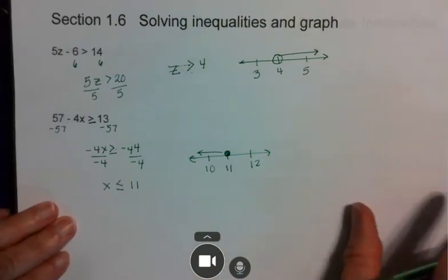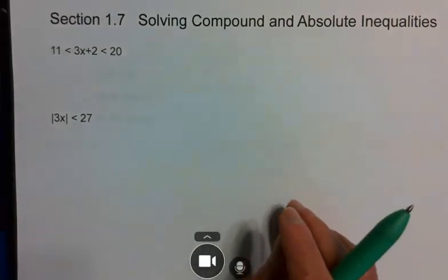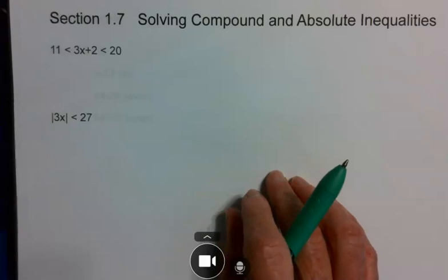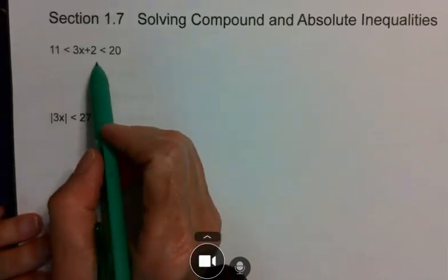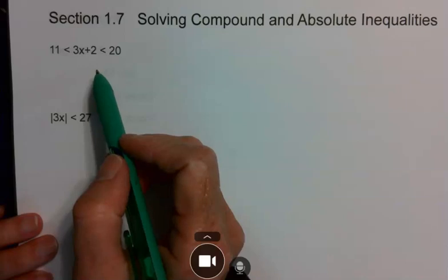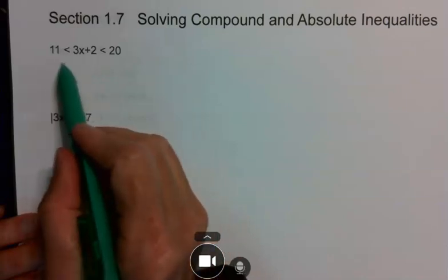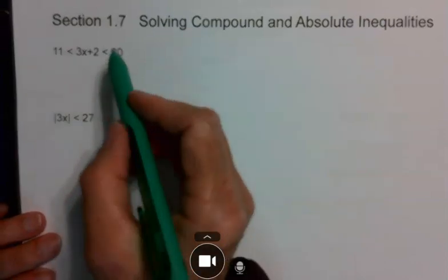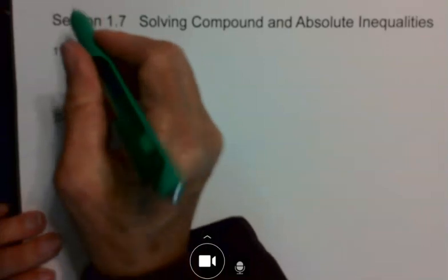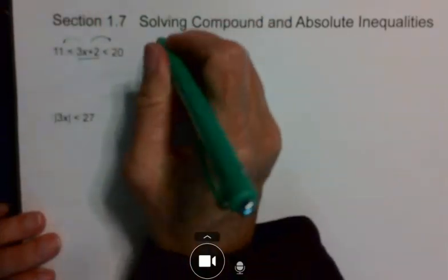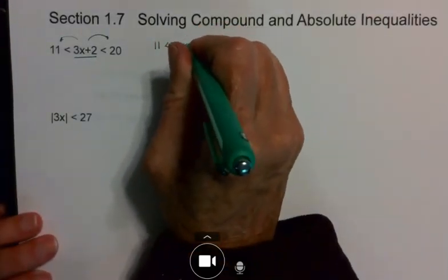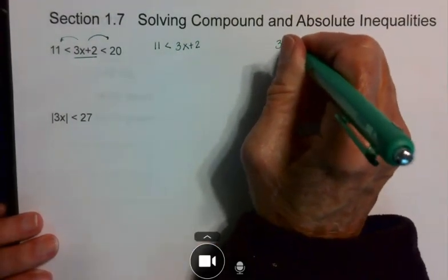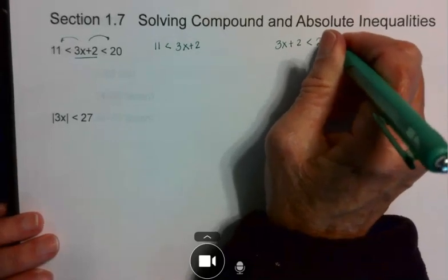Now you're going to combine the inequalities with the absolute values. When you see something like this, it's an automatic AND. Remember, when you have an AND statement, it means the numbers have to fit in both equations. It looks like you have one equation here, but you actually have two because that center section goes both with this equation and with this equation. So I have 11 is less than 3x plus 2, and I have 3x plus 2 is less than 20.